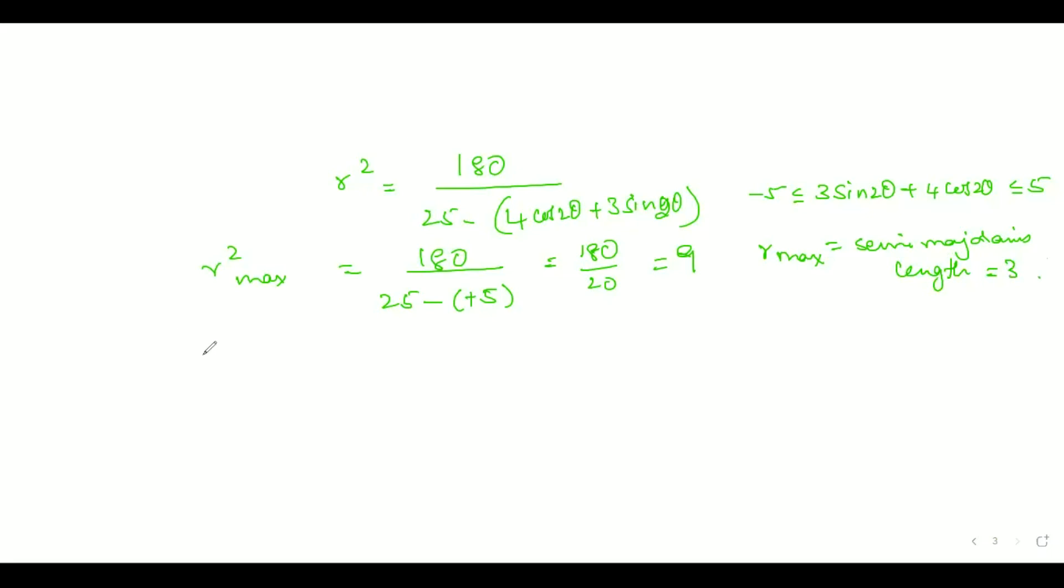Similarly, r squared minimum, when I want to find, the denominator should be maximum. So when does the denominator become maximum? When I substitute minus 5 in the place of 4 cos 2 theta plus 3 sine 2 theta. So in this case, it's 180 divided by 30, which is 6. So r minimum basically gives us semi minor axis length, which is in this case root 6.